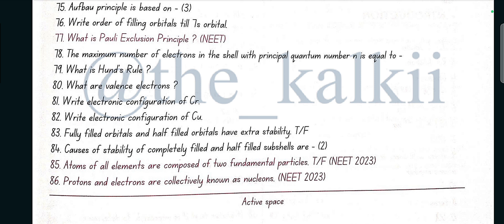Atoms of all elements are composed of two fundamental particles? Yes, true. Protons and electrons are collectively known as nucleons? No, false. Protons and neutrons are collectively called as nucleons. Chapter complete, thank you.